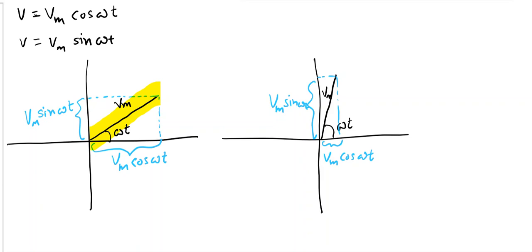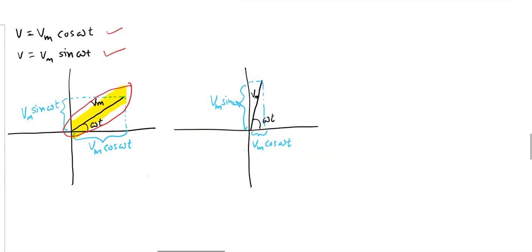I can say that Vm is a vector which is rotating as time proceeds. Such a rotating vector represents a physical quantity — voltage — which is actually not a vector but a scalar quantity, yet we are presenting it in vector form. Such a rotating vector is called a phasor. Vm is a phasor.